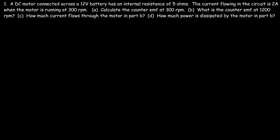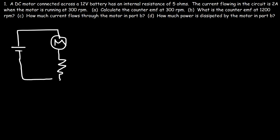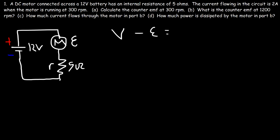Problem 3: a DC motor connected across a 12-volt battery has an internal resistance of 5 ohms. The current flowing in the circuit is 2 amps when the motor is running at 300 RPMs. In the circuit, the 12-volt battery is connected across the DC motor, which has an internal resistance r of 5 ohms and a counter EMF. To calculate the counter EMF, we use the same formula we've been using.